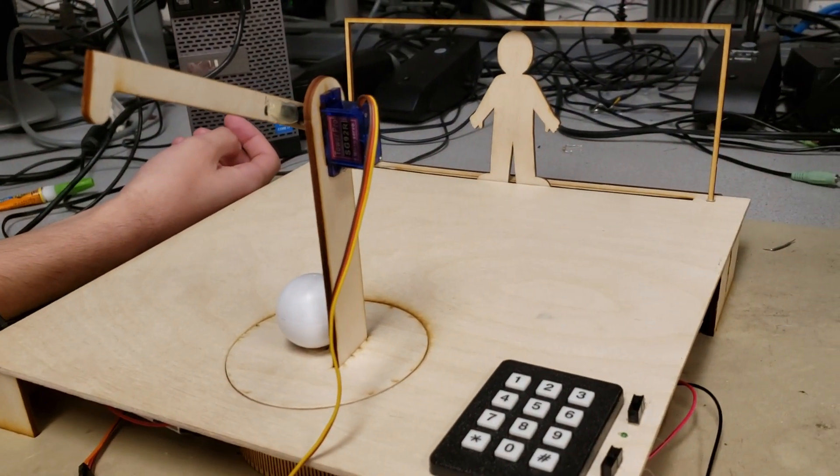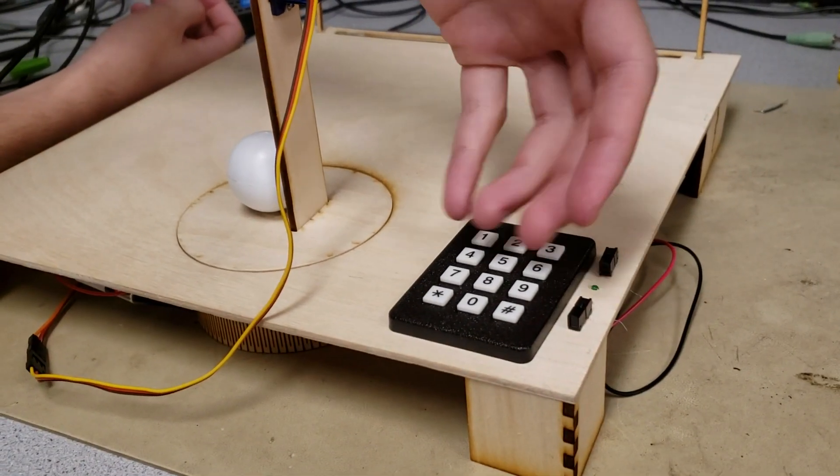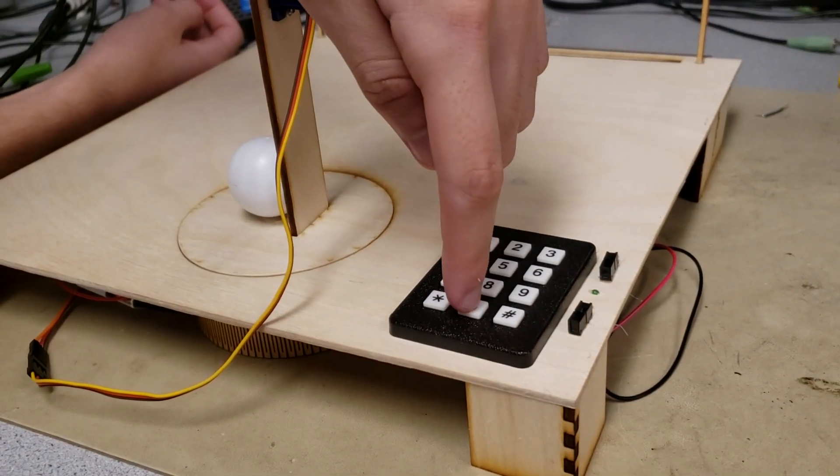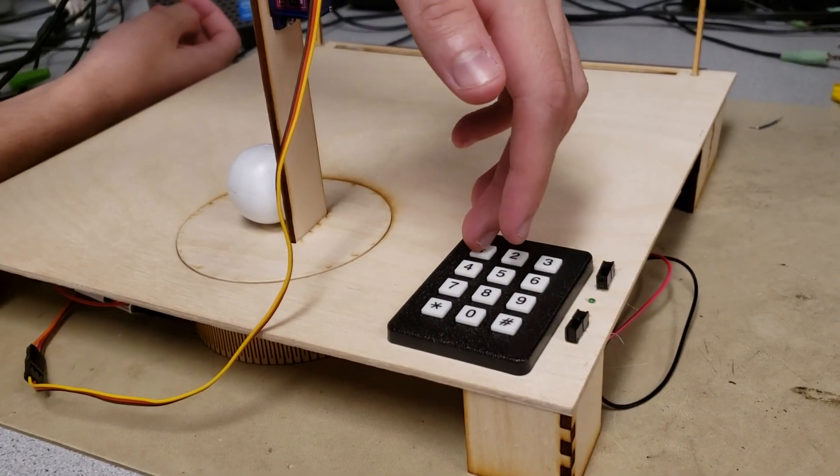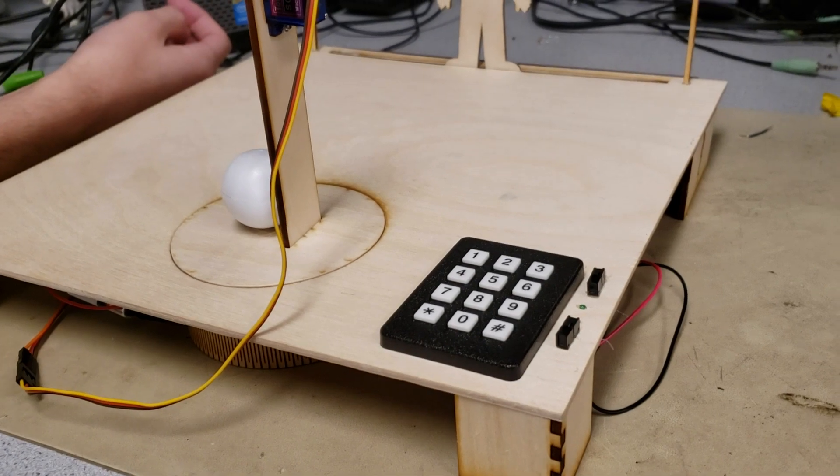We've got speed control right here. You can start and stop the game by pressing zero, and then buttons one through nine will adjust the speed, one being the lowest, nine being the highest. Nine being impossible.